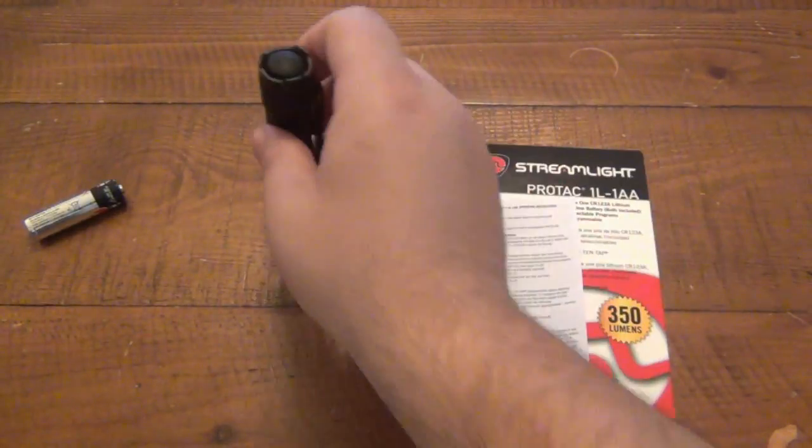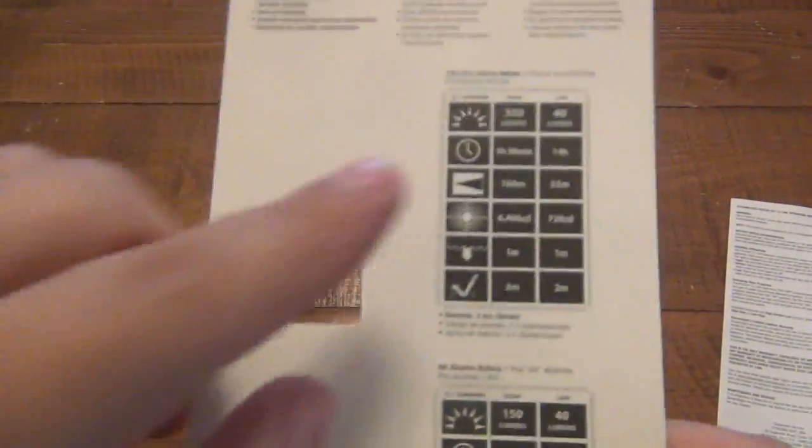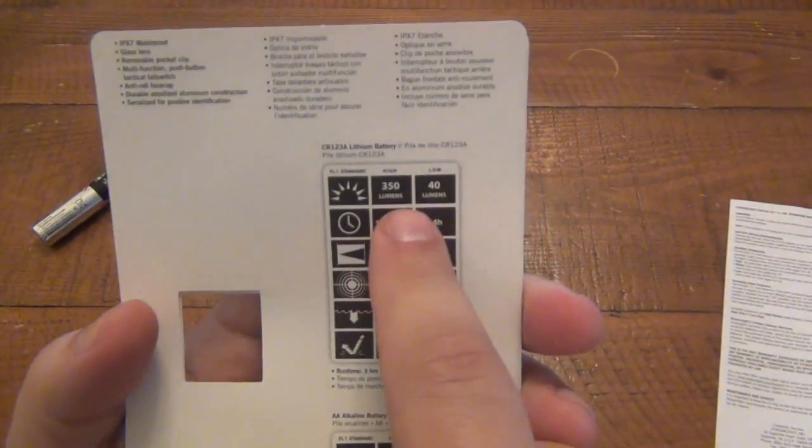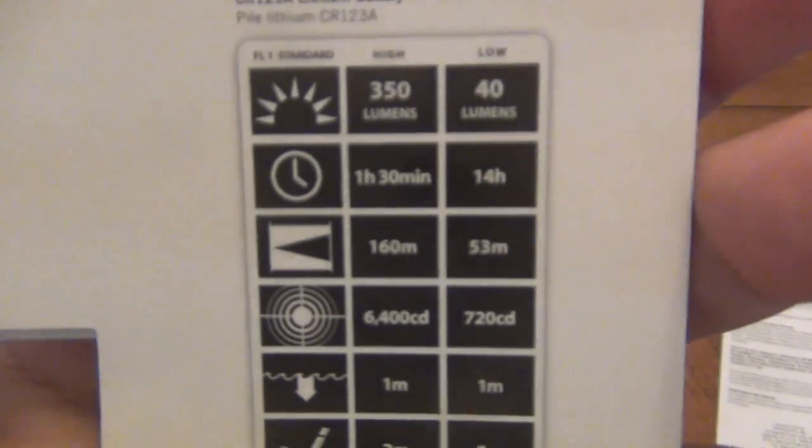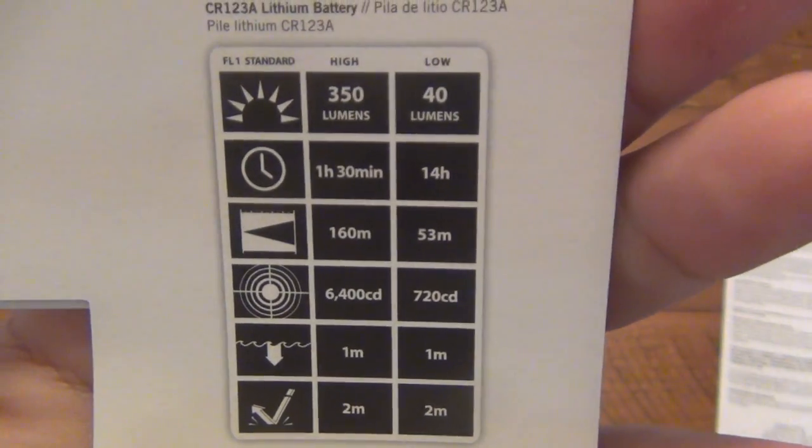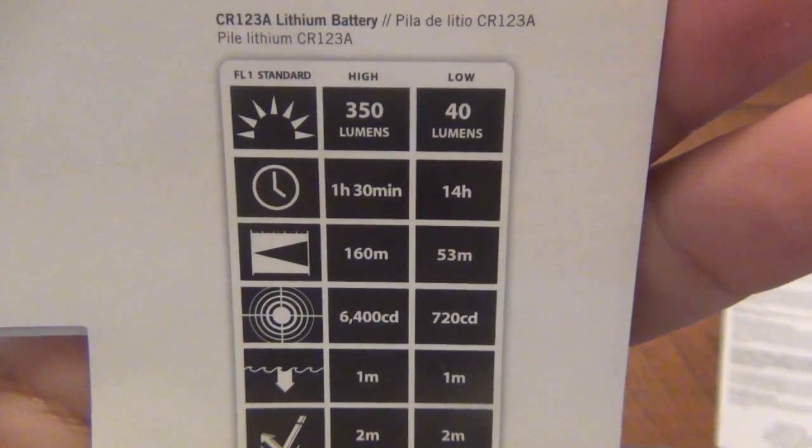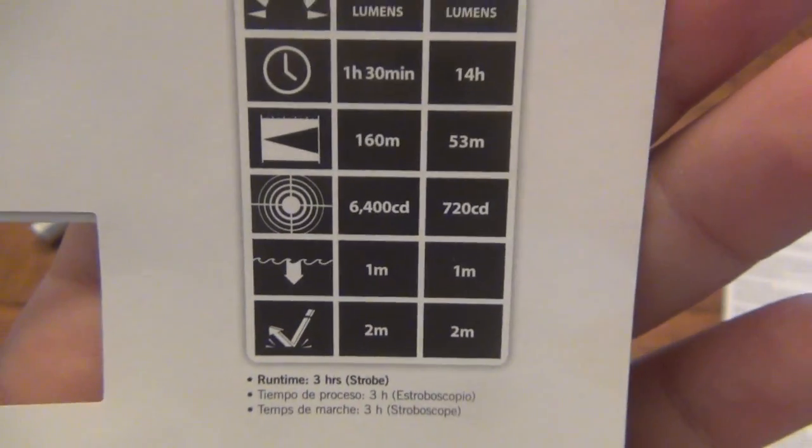So let's go over some of the different outputs and stuff. It's all right here. I saved this paper, so I wouldn't have to say it each time. So there's three different sets of outputs and information here. The first one is on a single CR123. So take a close look at that. 350 lumens for high, 40 lumens for low. On the 350, we get an hour and a half runtime. On the low, we get 14 hours.